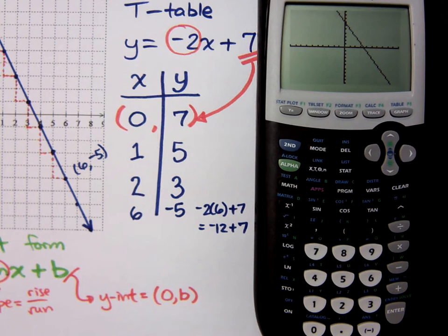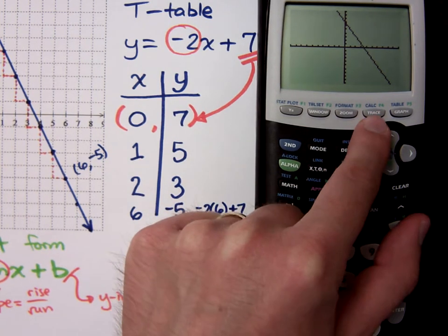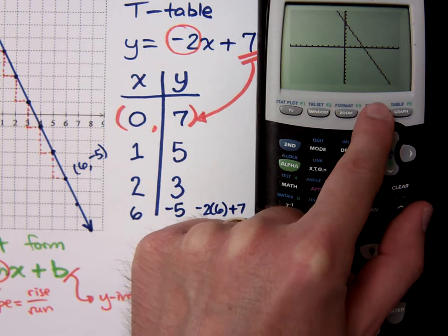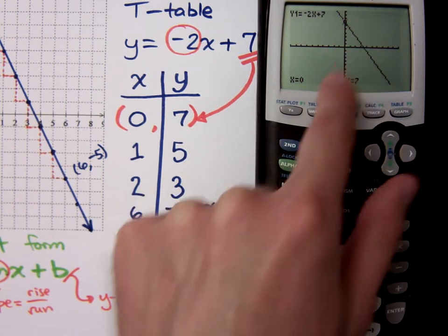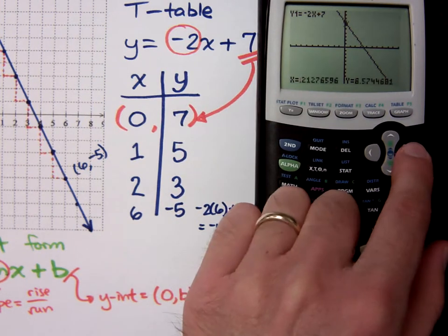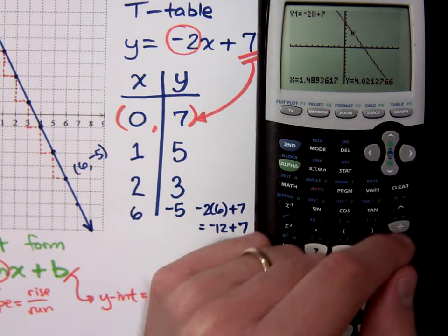Now, if you go back to the graph, you can trace along the graph if you want to, but it's not really the best thing. See, when I click trace, it gives you the order pairs where the tracer is located, 0, 7. But notice, as you go to the left and to the right, it gives you these crazy decimal values. And that's not very useful to you.